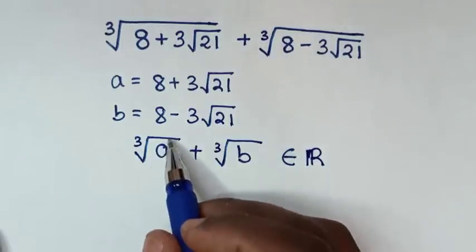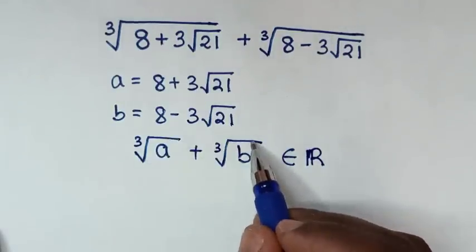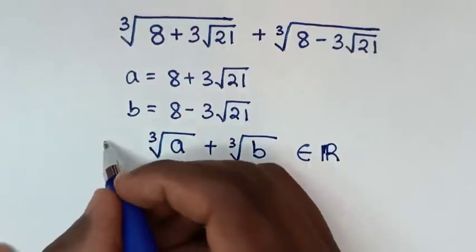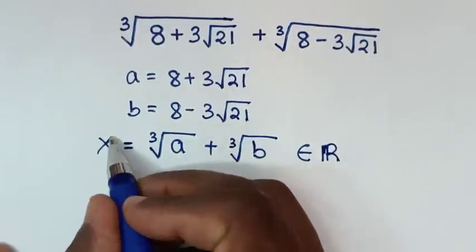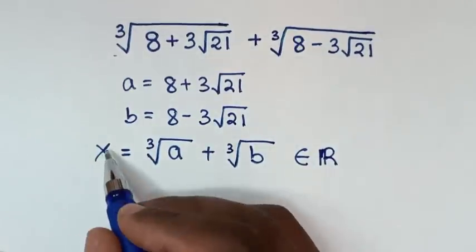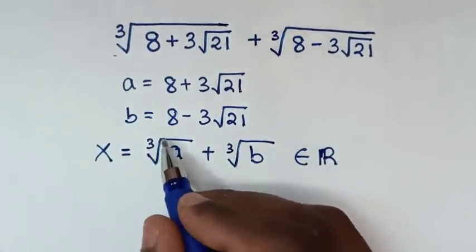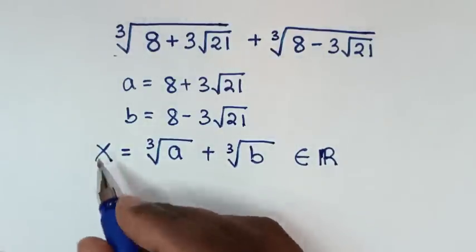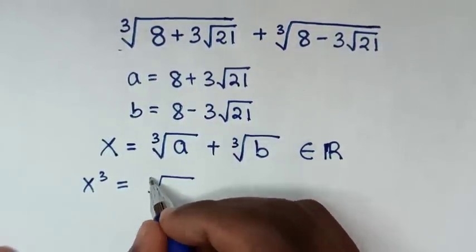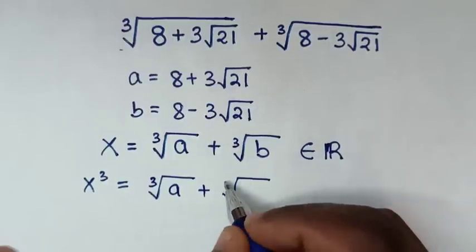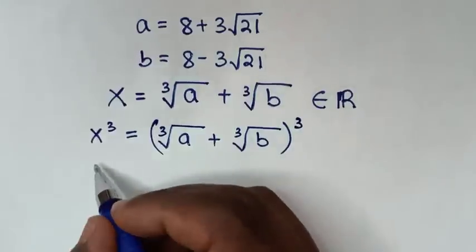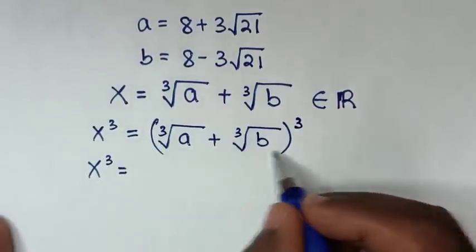Because cube root of a is an element of the real numbers and cube root of b is an element of the real numbers, we'll let this sum, cube root of a plus cube root of b, equal x. So we are finding the value of x. Because we have this cube root, to cancel it we'll raise both sides to the power of 3. So x³ is equal to (cube root of a plus cube root of b)³.